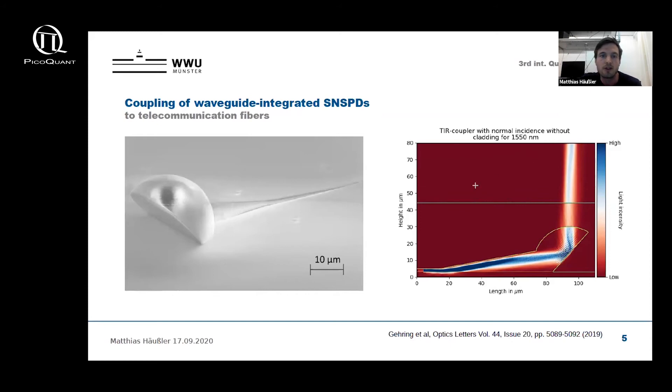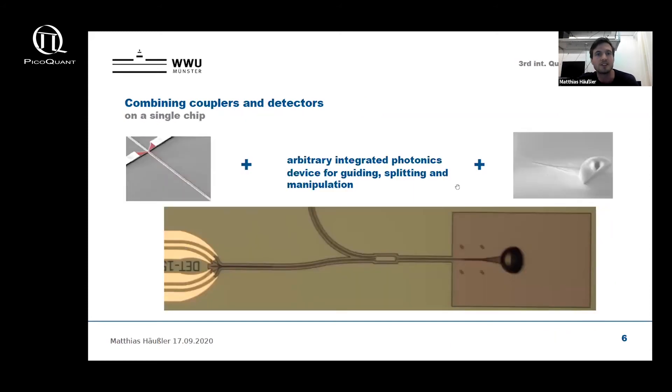Now that we have both the couplers and detectors, we can combine them on a single chip. On the bottom you can see a microscope image of a detector including gold electrodes for electrical access, and it is connected via a waveguide and a splitter to a 3D printed coupler here on the right side. This configuration is then a single building block of our final multi-channel sensing device.